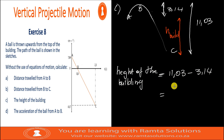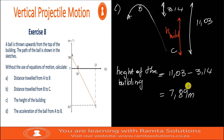11.03 minus 3.14 gives us 7.89 meters. So that's the height of the building — 7.89 meters.